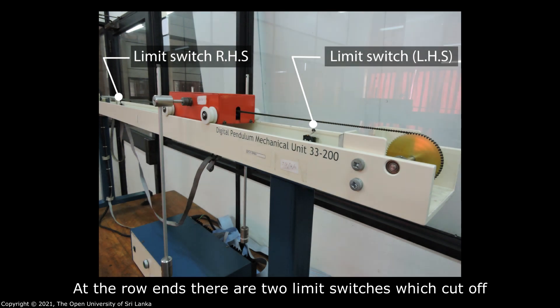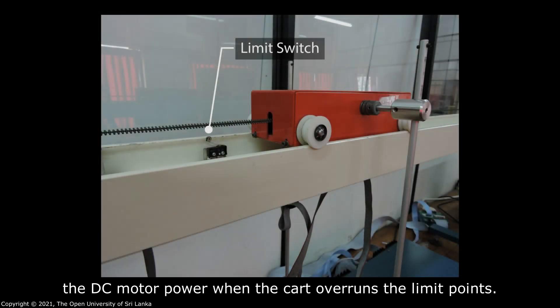At the rail ends there are two limit switches which cut off the DC motor power when the cart overruns the limit points.